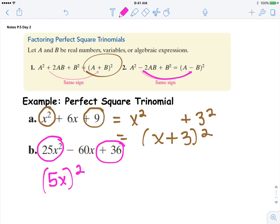This is your perfect square of 6 squared. Be careful on the sign. It's going to be in the rule 5x minus 6 all squared.